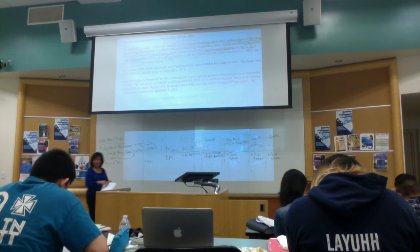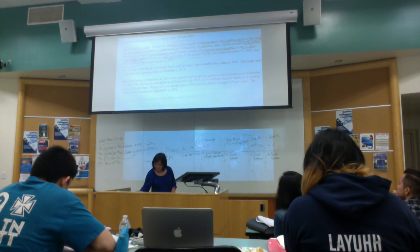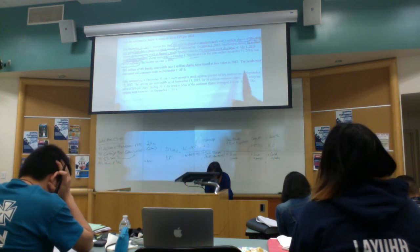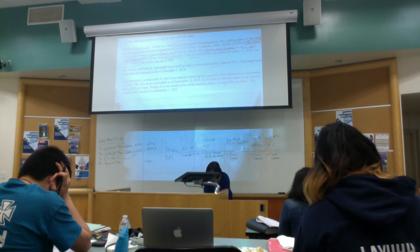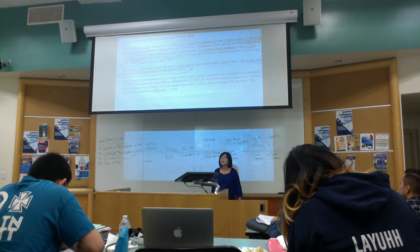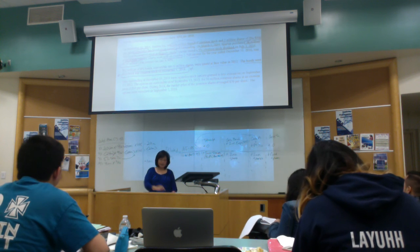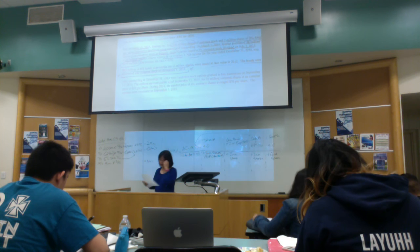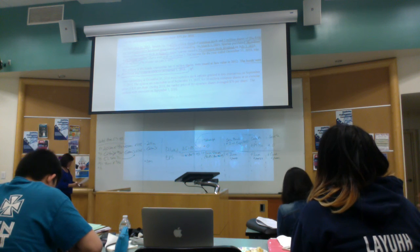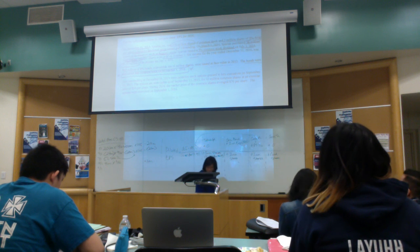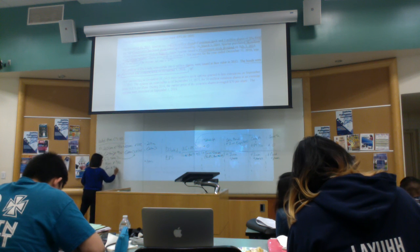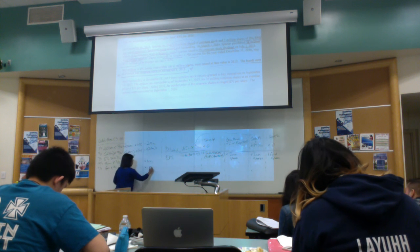Reading the second paragraph: there are 63 million convertible bonds, convertible into 6 million shares, issued based on 2012. The bonds were converted into common stock on November 1. So on November 1, the bonds became common stock — 6 million times 2/12, which gives 1 million shares to add.